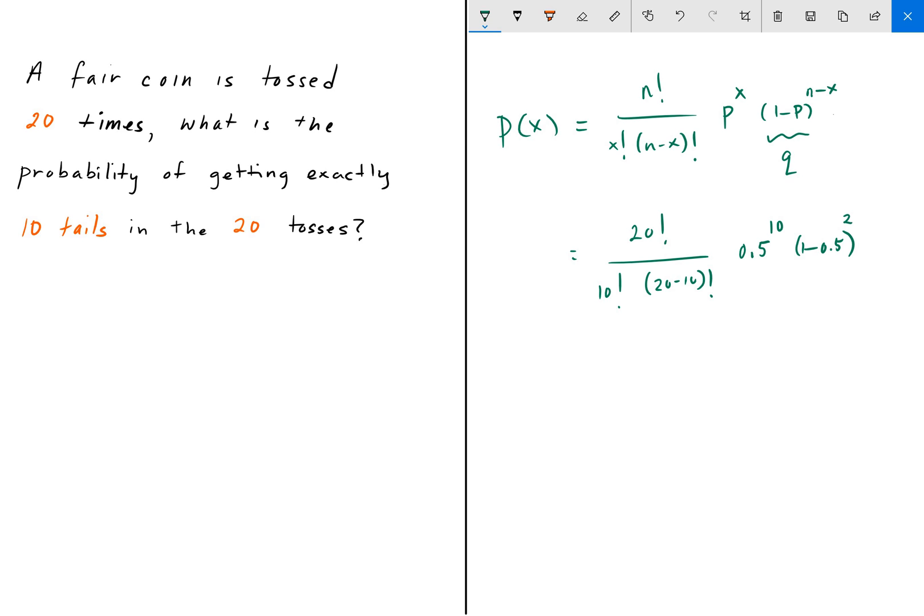We can plug that into the calculator, and when we do so, we get 0.176. That tells us that the probability of getting exactly 10 tails out of 20 tosses is about 17.6%.